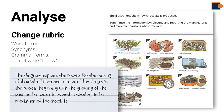In the paraphrased version, the words 'illustrations show' are changed into 'diagram explains.' Moreover, the statement 'how chocolate is produced' is changed into 'the process for the making of chocolate.' This involves a change in both grammar and lexical form, where the word 'produced,' which is a verb, is changed into the gerund 'making.'